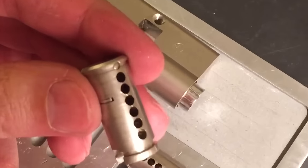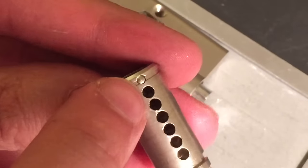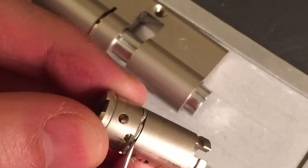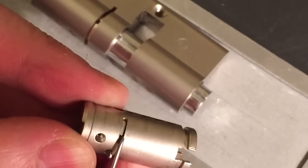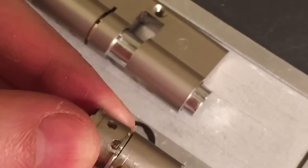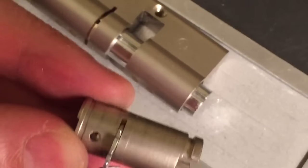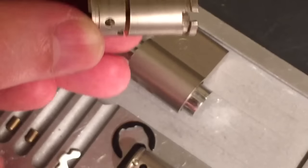On the core, we have what looks like an anti-drill pin here, and then an anti-drill plate. Let me get this out, some sort of core insert here. I'll put him down in the number eight slot so we can look at him later.